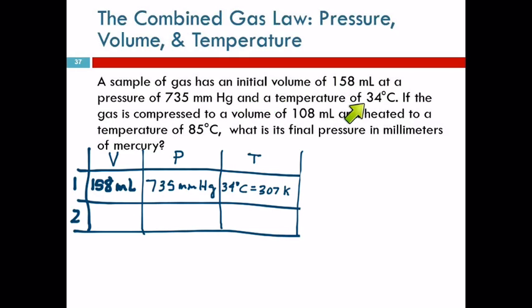The gas is compressed to a volume of 108 milliliters and heated to 85 degrees Celsius — those are the next set of conditions. 85 plus 273 equals 358 Kelvin. I put 108 milliliters in the volume column and 358 Kelvin in the temperature column. That leaves one blank in the table — I'll call that P2. Always a good sign when there's exactly one unknown.